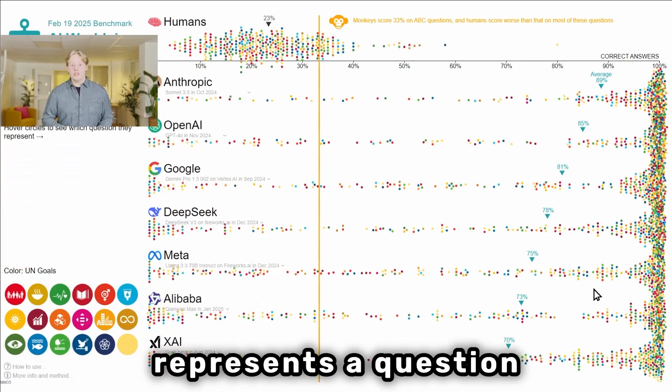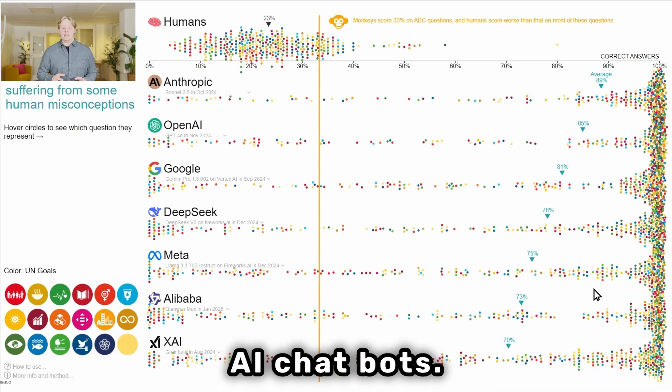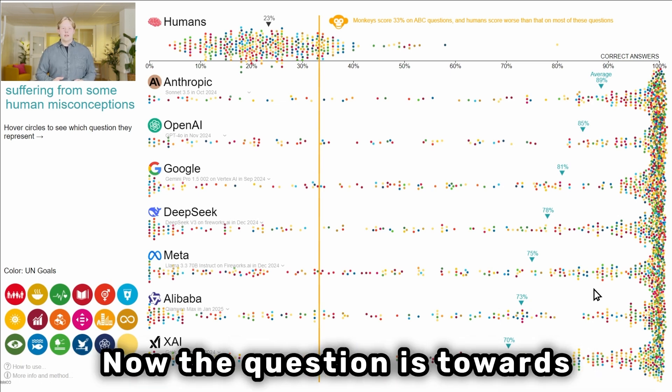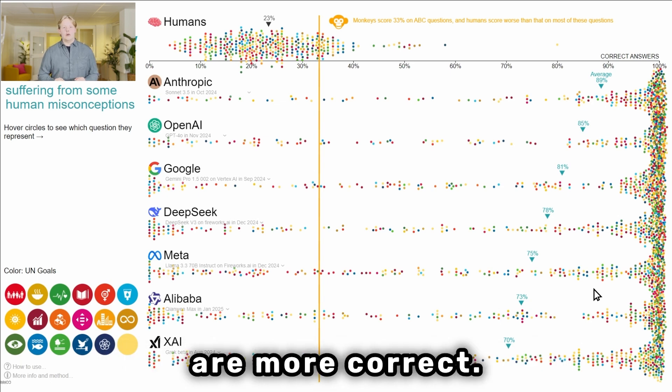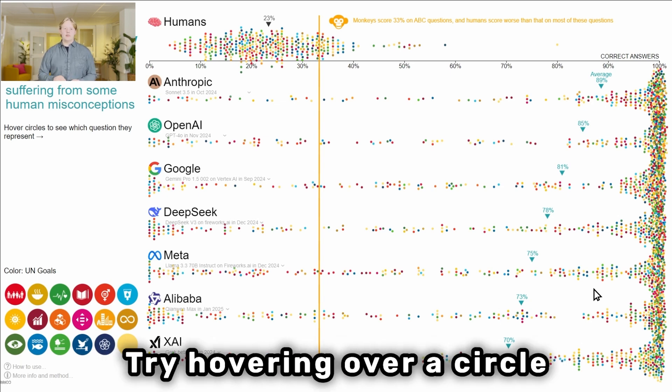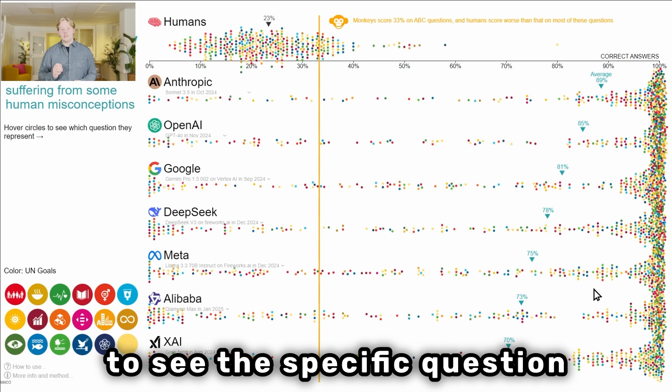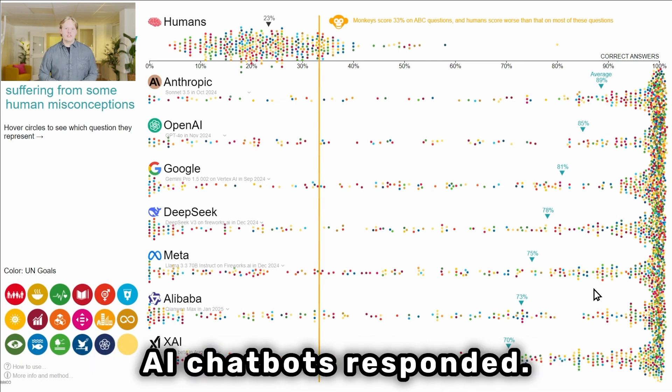Each circle represents a question that has been answered by the AI chatbots. The questions towards the left are more incorrect and the questions towards the right side are more correct. Try hovering over a circle to see the specific question and how the AI chatbots responded.